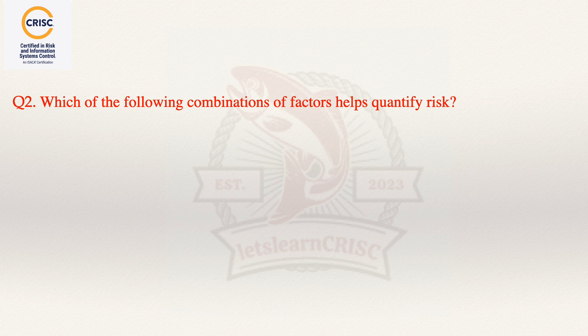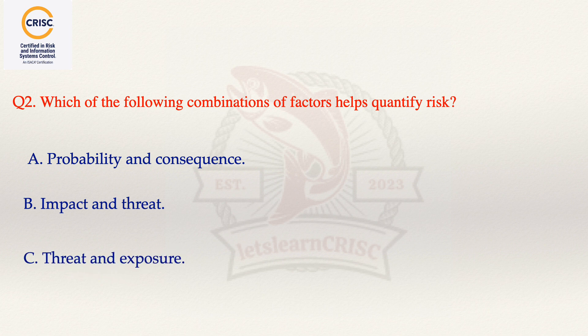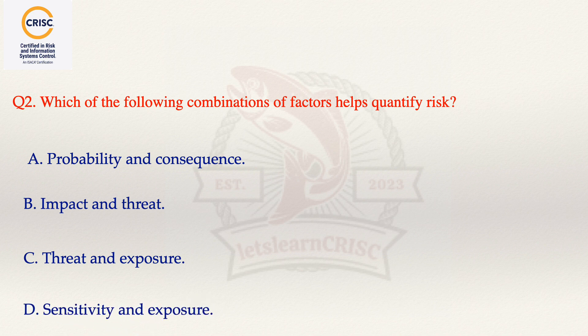Question number 2 states: which of the following combination of factors helps quantify the risk? The options are: option A, probability and consequences; option B, impact and threat; option C, threat and exposure; and option D, sensitivity and exposure.